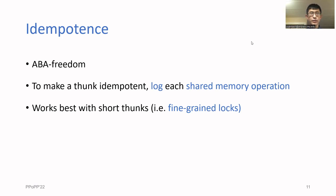To make thunks idempotent, we use a shared log. Basically the log helps processes agree on the result of each shared memory operation. This approach works best for fine-grained locks, where the critical sections are small. It would still be correct on larger critical sections, but we didn't evaluate this in our experiments.